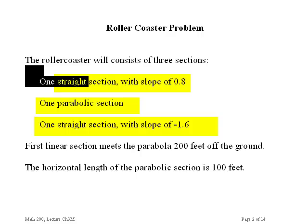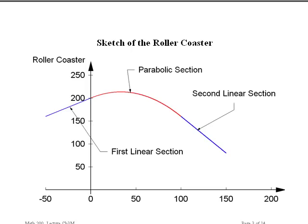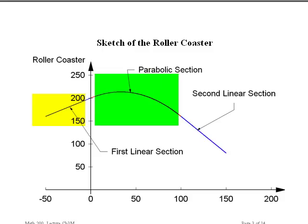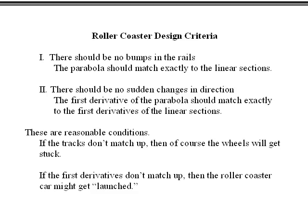The first thing to do in encountering a problem like this is to make a sketch. So here's our roller coaster: the first linear section right over here, 200 feet off the ground. It encounters a parabola, and the parabola goes until x equals 100, then it matches up with a second linear section. In most design problems, you get to pick the origin. I arbitrarily put x equals 0 at the point where the first linear section encounters the parabola.